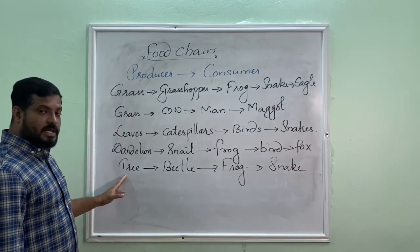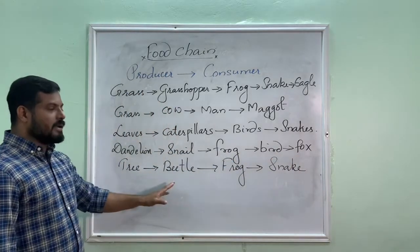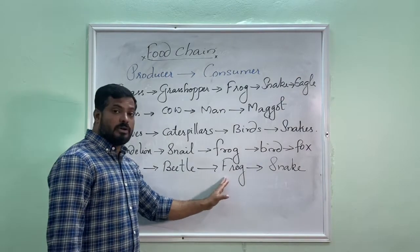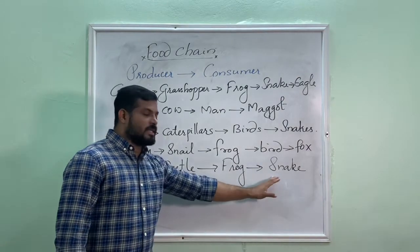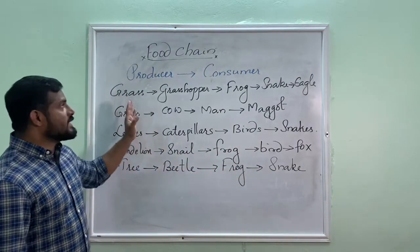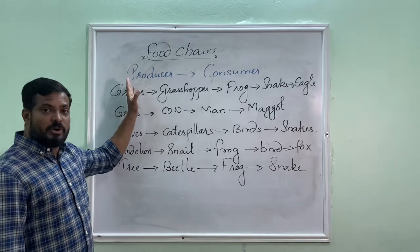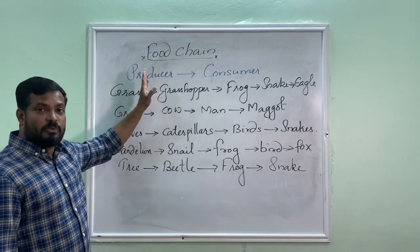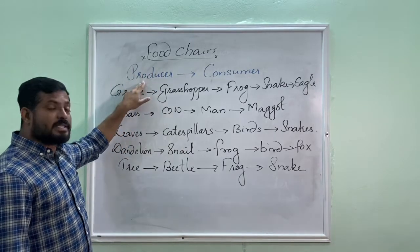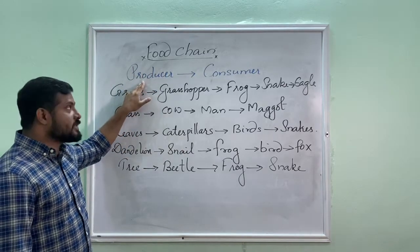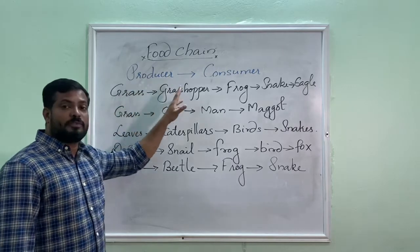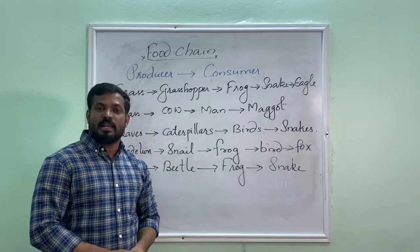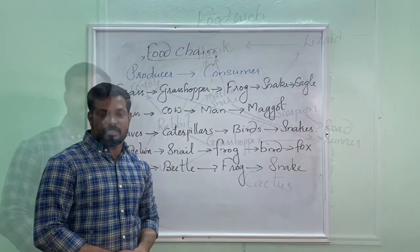Another example: tree, beetle, frog, snake. Now I think it is very clear about food chain. Remember, while writing a food chain the first stage is producer and followed with consumers. Now you want to write any five food chains.